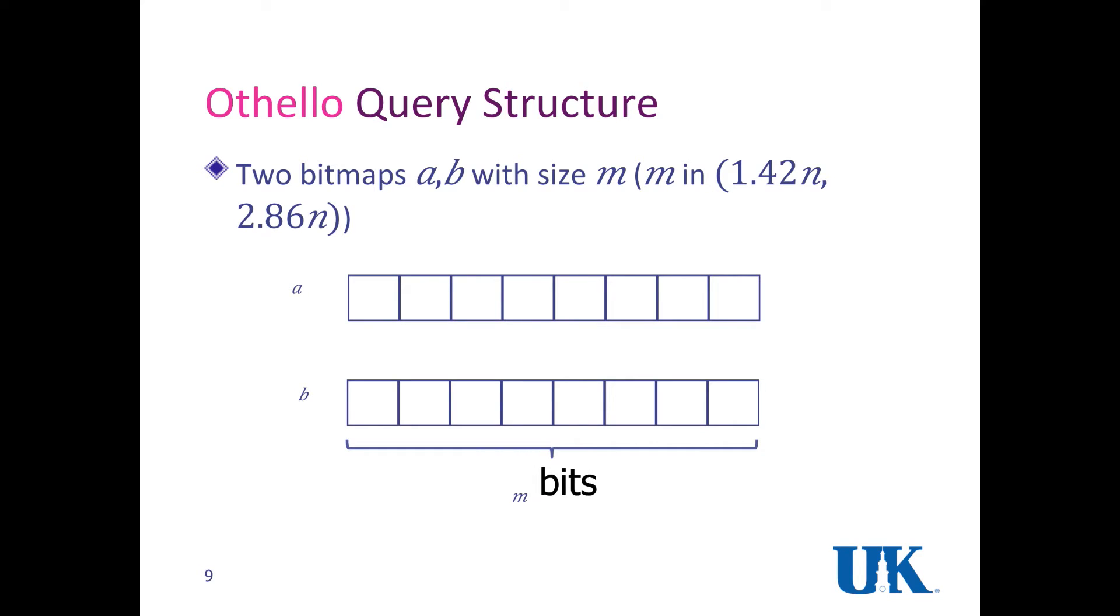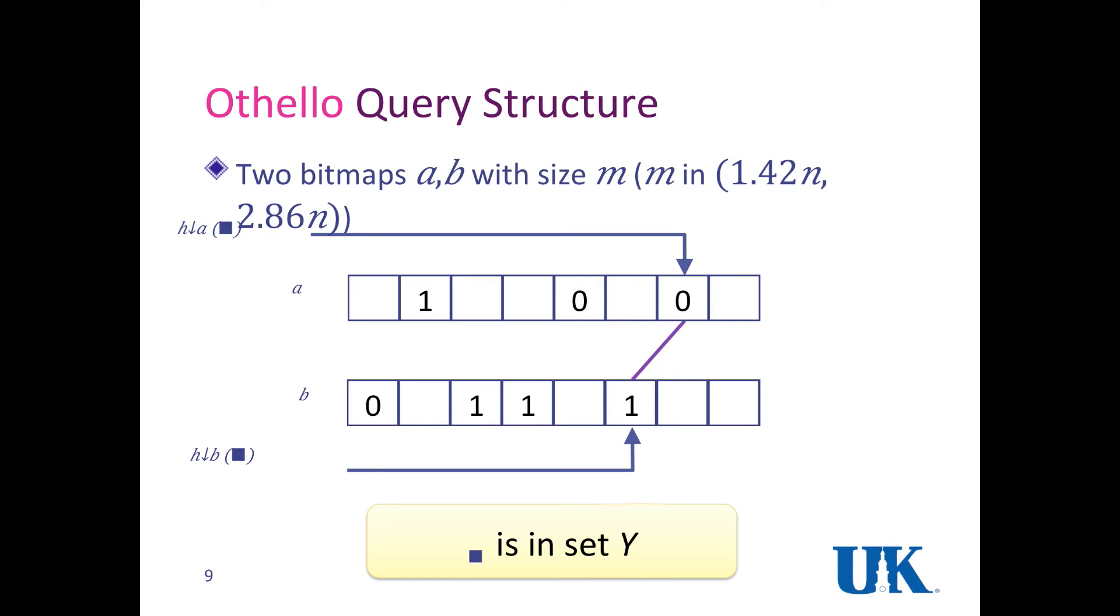The query structure is very simple for Othello. We have two bitmaps, each of them with size M, and M is just N, which is number of names times a small constant. So in total, there are like two M bits. We have two hash functions. When we want to query a name, we apply these two hash functions and map the result to one bit in A and another bit in B. We take an XOR of the two bits and we get the query result of this name. The result of this purple square is one, which means this name is in set Y. This query operation is very simple.